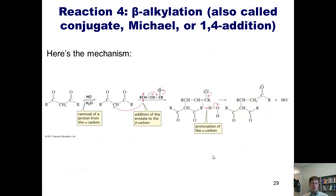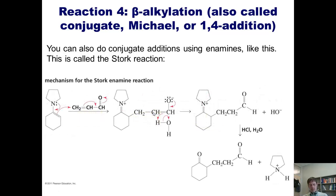The mechanism was alluded to before and is shown in drawing form on this slide — I'll let you look at it yourself rather than narrating it. Conjugate additions can also be done using enamines; this type of reaction is called the Stork enamine reaction, named after Columbia University chemist Gilbert Stork. There's a humorous but controversial personal anecdote about this reaction that will have to wait for class.